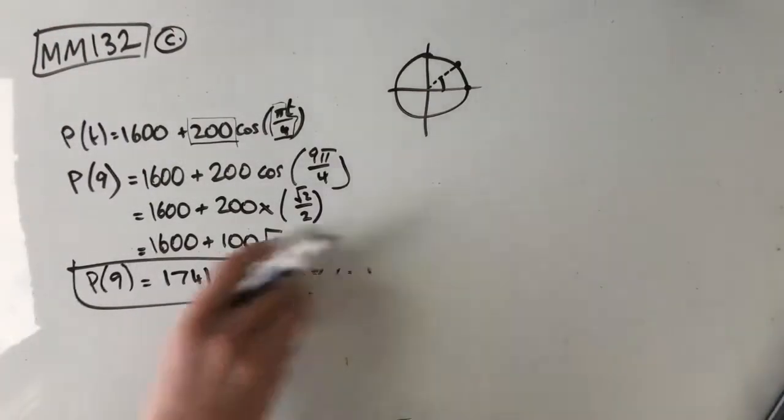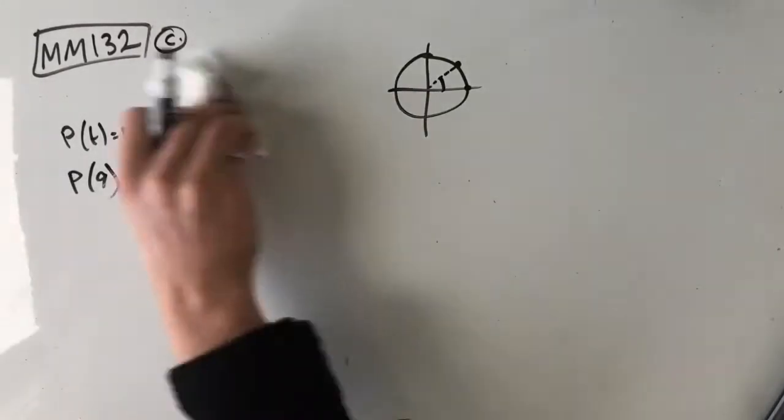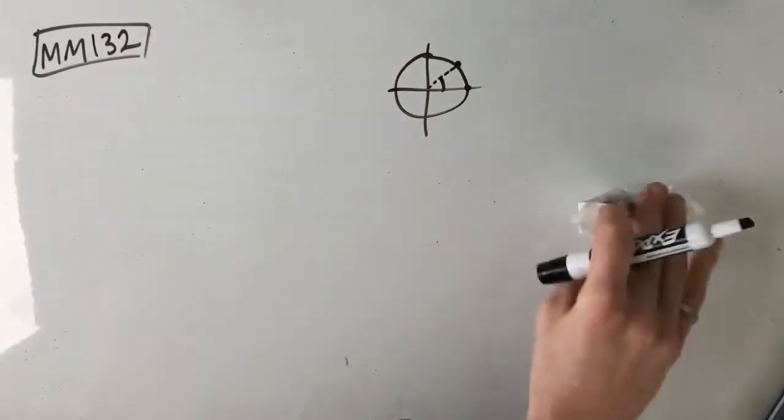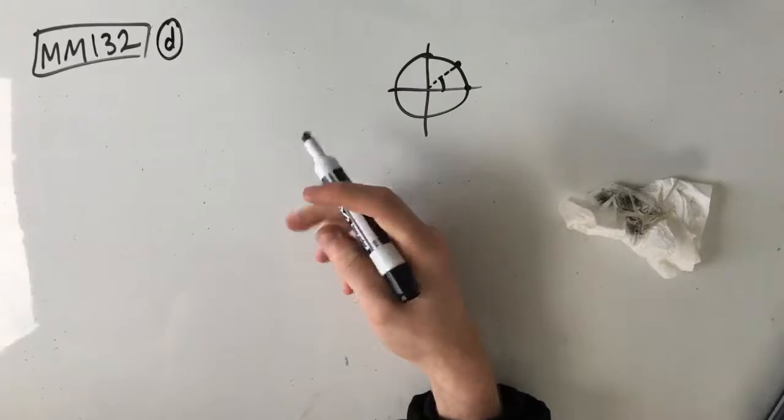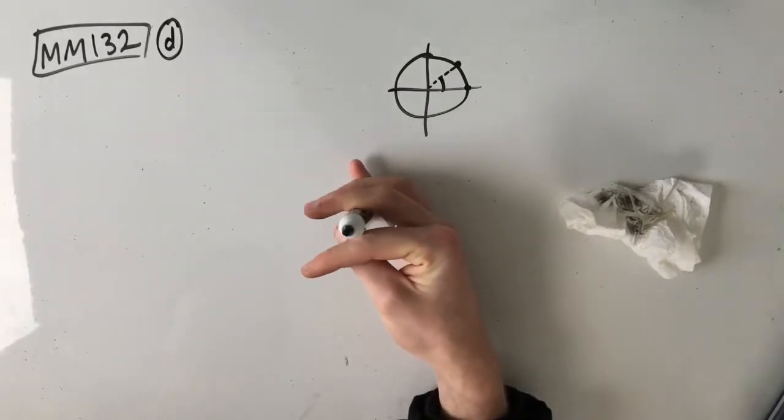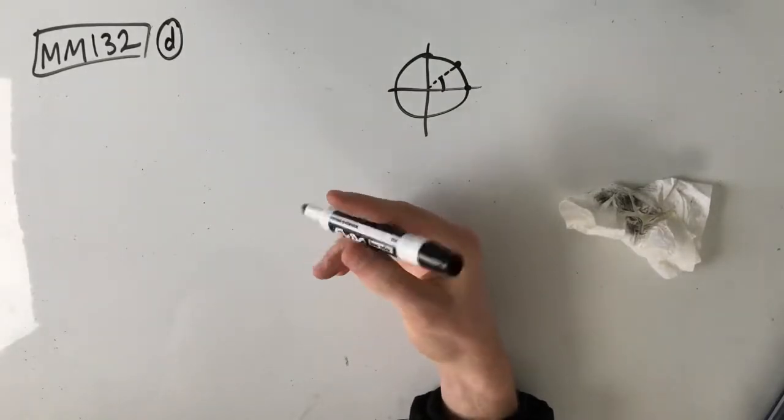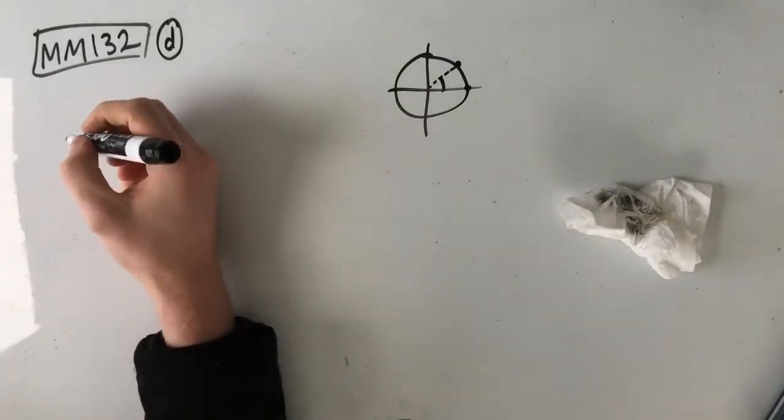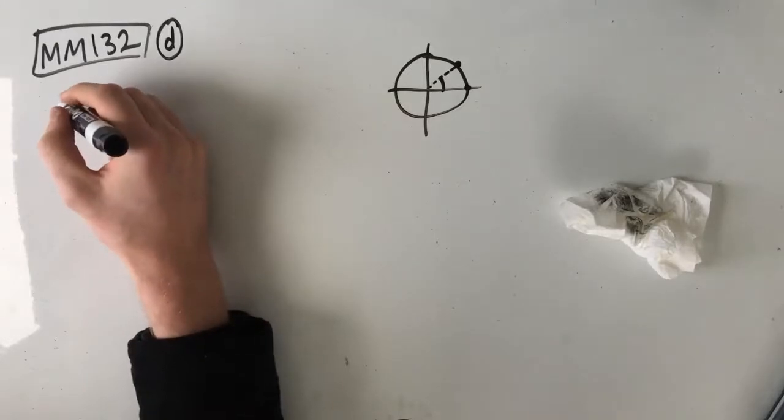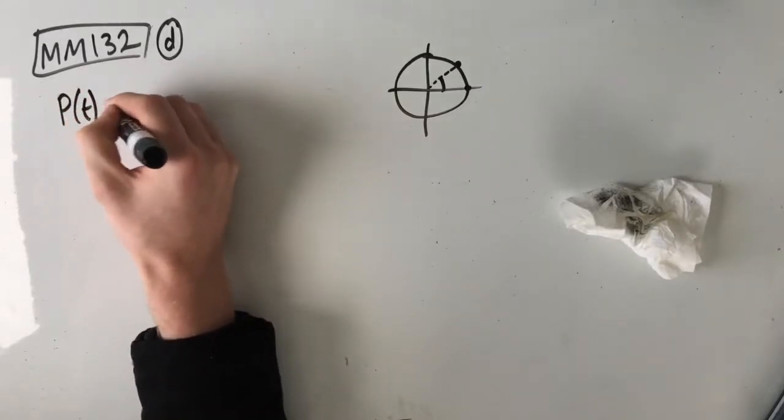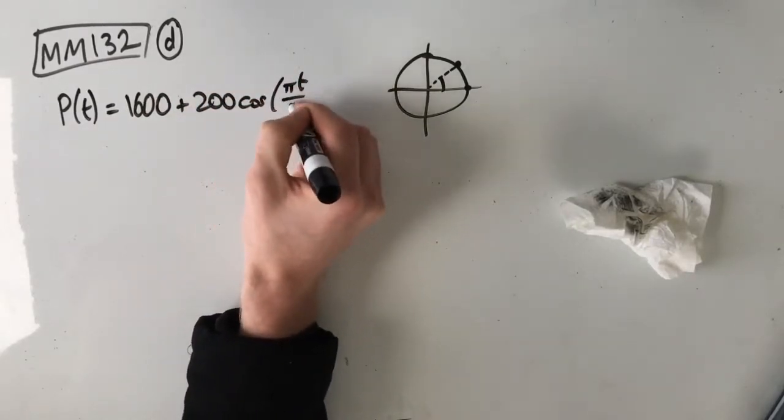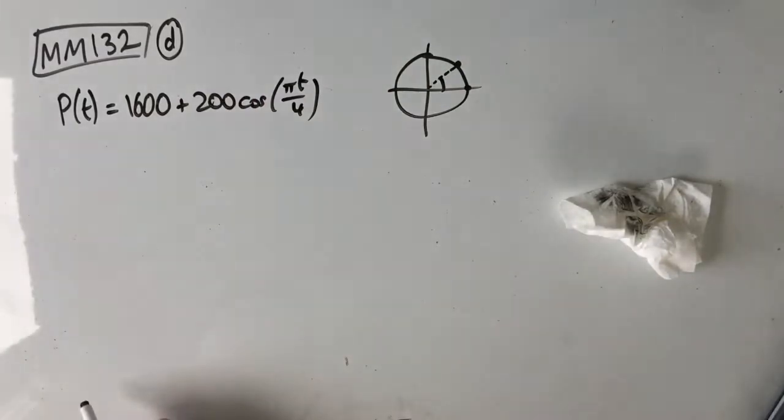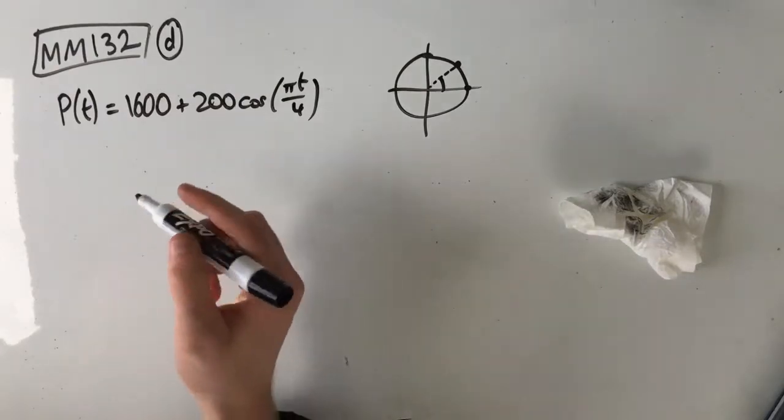So part D talks about in the six months following 1st of February, so from t equals 0 to t equals 6, what is the proportion of time when the population of possums in the area was less than p(9)? Give your answer in percentage form, correct to two decimal places. The best way to do this is to just look at the graph. So I'm just going to write this out again, 1600 plus 200 cos of πt on 4. What you want to do is actually sketch this on your calculator, because that's just going to be the easiest way to figure out what's going on here.